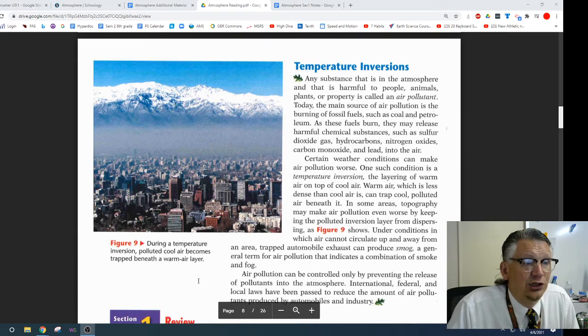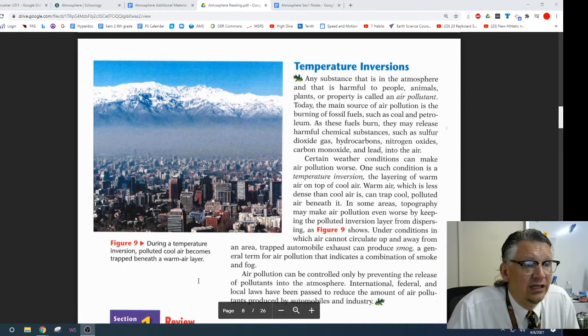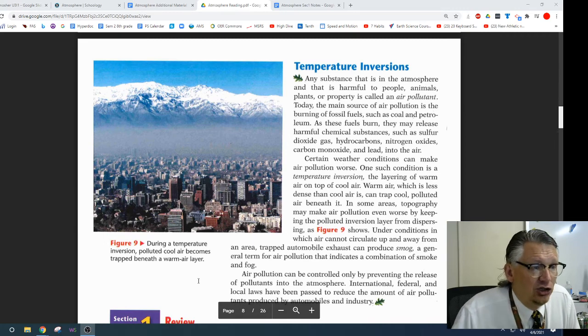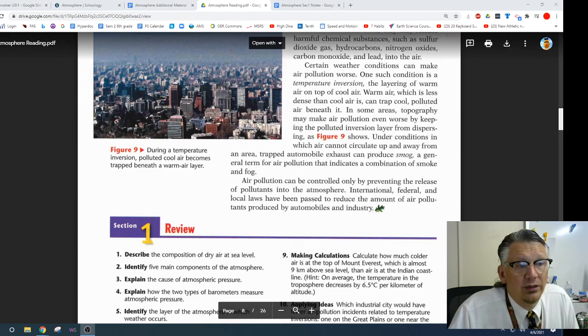Certain weather conditions can make air pollutants worse, such as conditions in temperature inversions—the layering of warm air on top of cold air. Warm air, which is less dense than cool air, can trap cool, polluted air beneath it. In some areas, topography may make air pollution even worse by keeping the polluted inversion layer from dispersing. As shown in Figure 9, under conditions in which air cannot circulate up and away from the area, trapped automobile exhaust gas can produce smog, a general term for air pollution that indicates a combination of smoke and fog. Air pollution can be controlled only by preventing the release of pollutants into the atmosphere. International, federal, and local laws have been passed to reduce the amount of air pollutants produced by automobiles and industries.